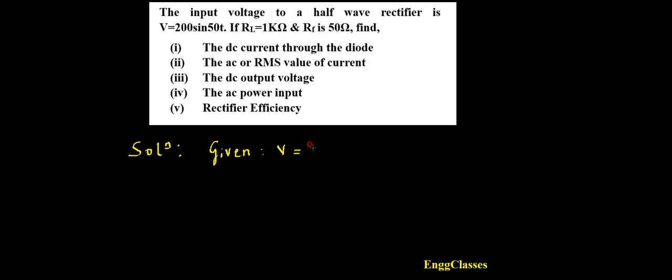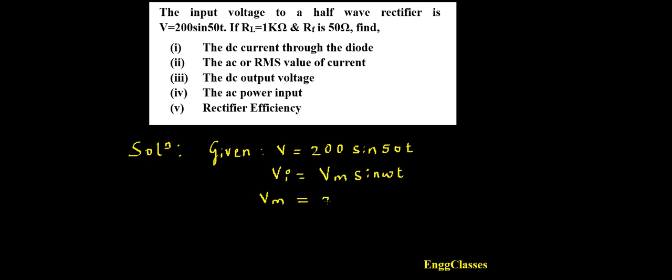Let me write the given parameters. The input voltage is V = 200 sin(50t). Comparing this with VI = VM sin(ωt), we get the peak voltage VM = 200 V. The load resistance RL = 1 kilo-ohm, and the forward diode resistance RF = 50 ohm.